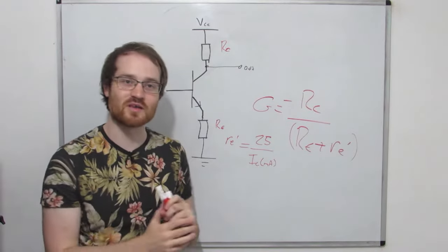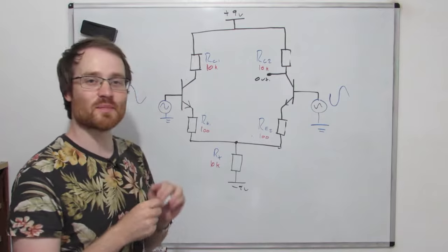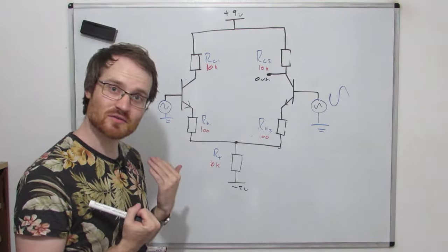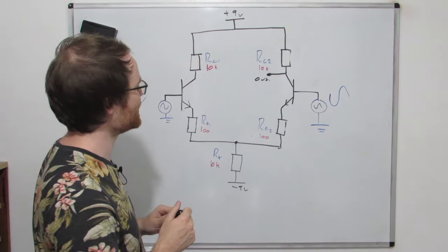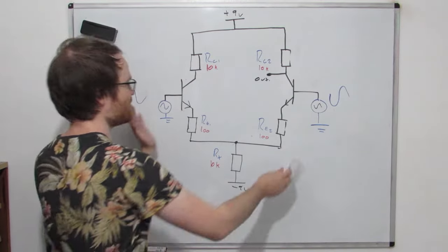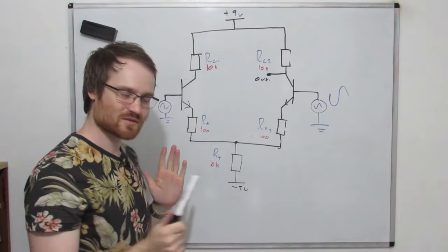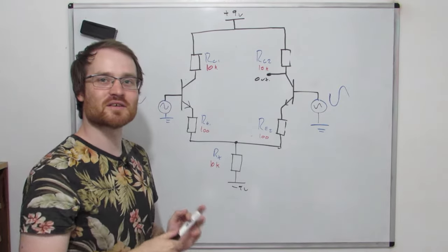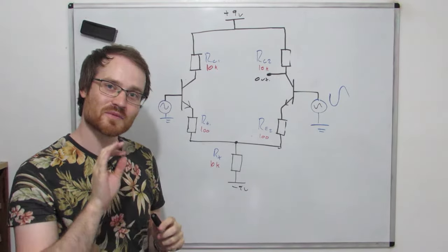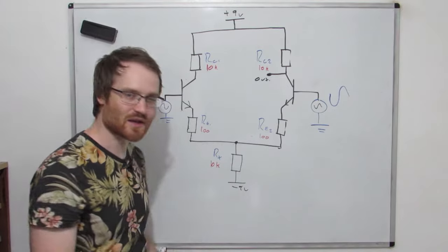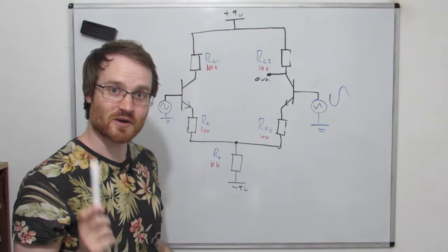So let's see how this compares with our differential amplifier. This is the circuit I built, and compared to a lot of the stuff we've done, this looks kind of complicated and scary — we've got multiple signals. But the way we're going to look at it is going to be very simple, and you're going to see that this is no more complicated than a common emitter amplifier.